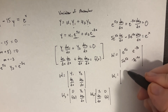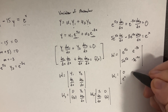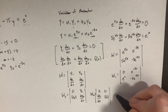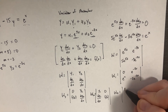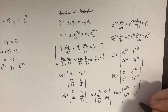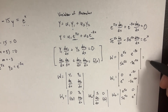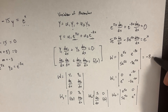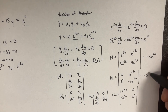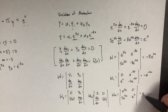W1 is the determinant with 0 and e^x substituted in: |0, e^(-3x); e^x, -3e^(-3x)|. W2 is: |e^(5x), 0; 5e^(5x), e^x|. Working these out: W = -8e^(2x), W1 = -e^(-2x), and W2 = e^(6x).